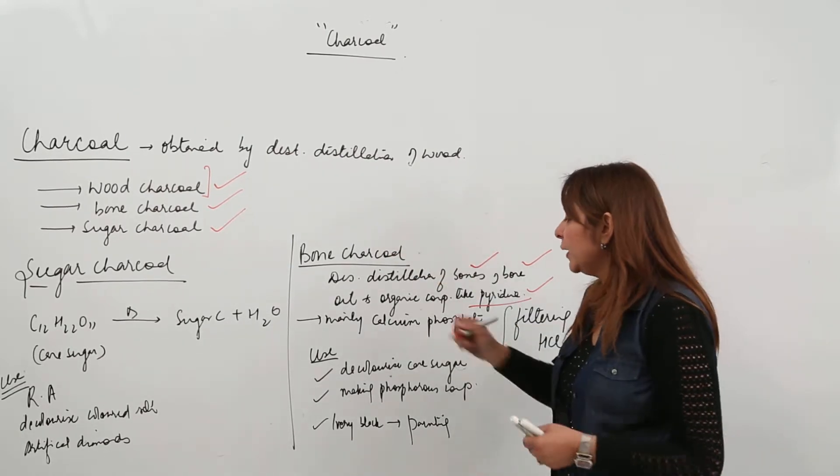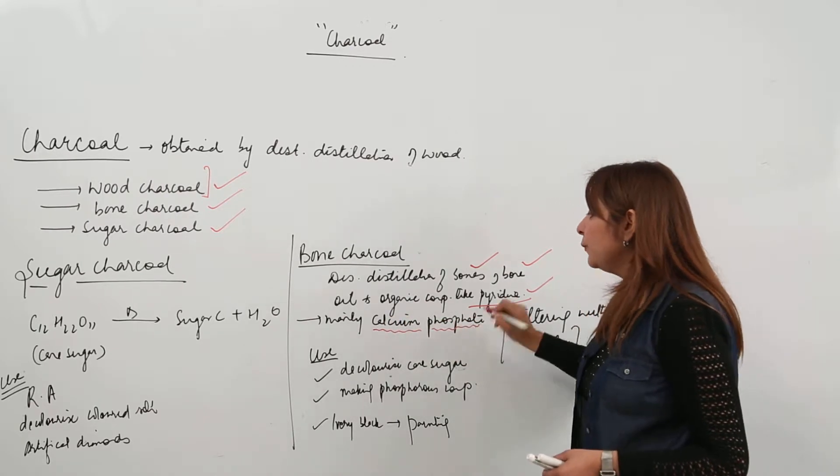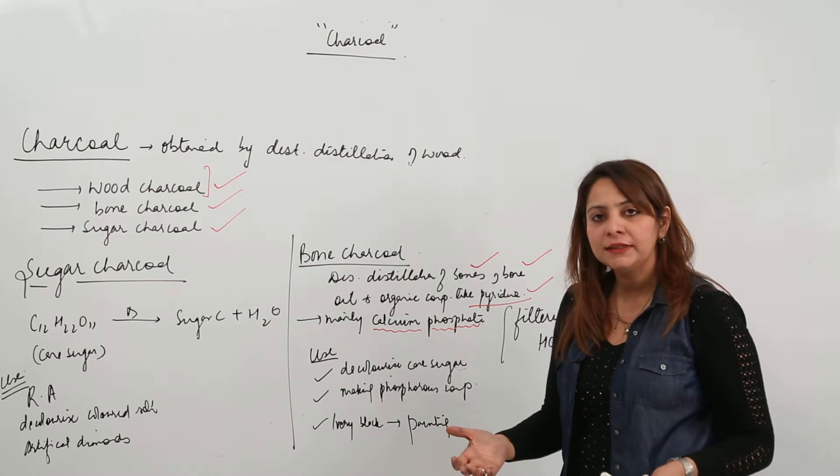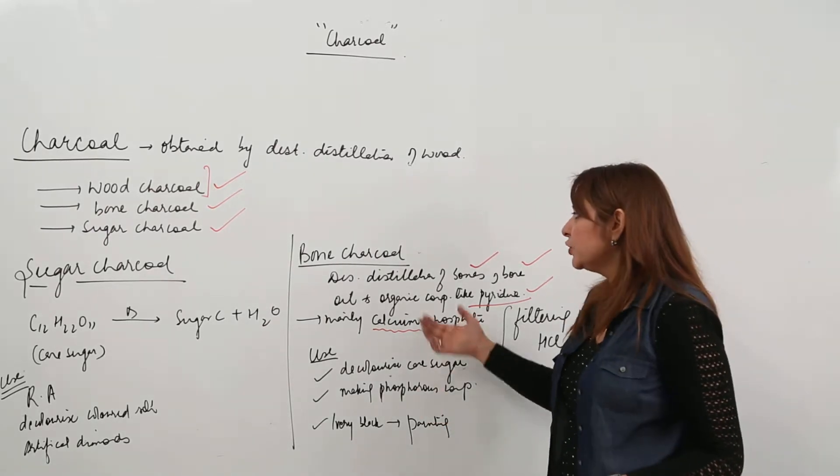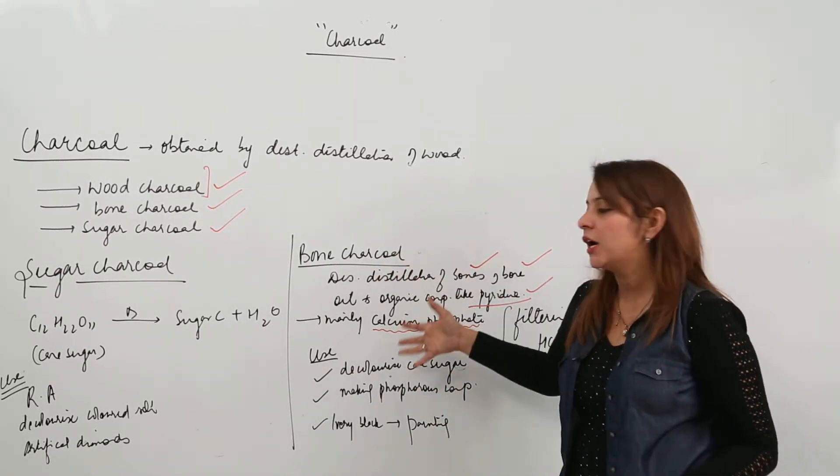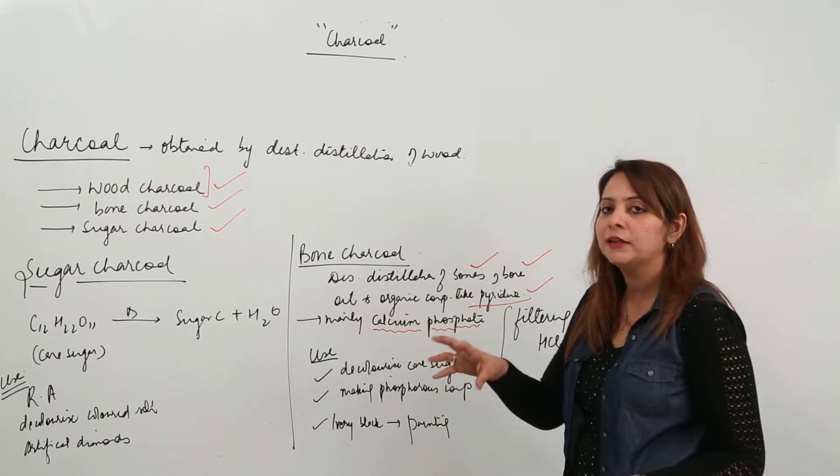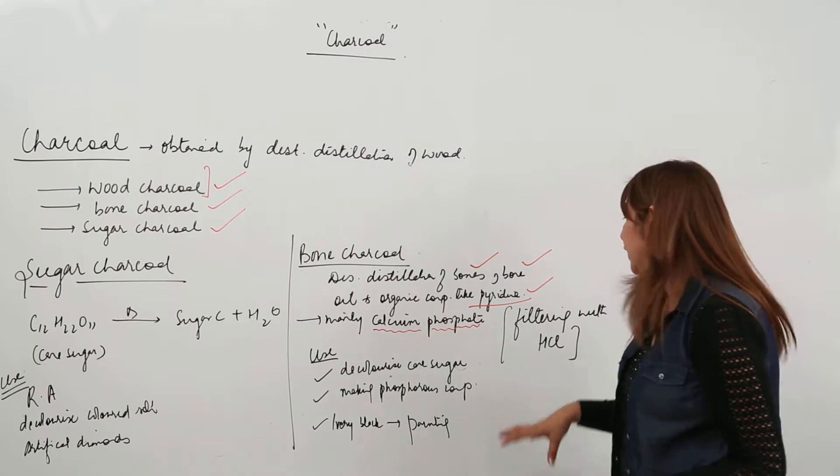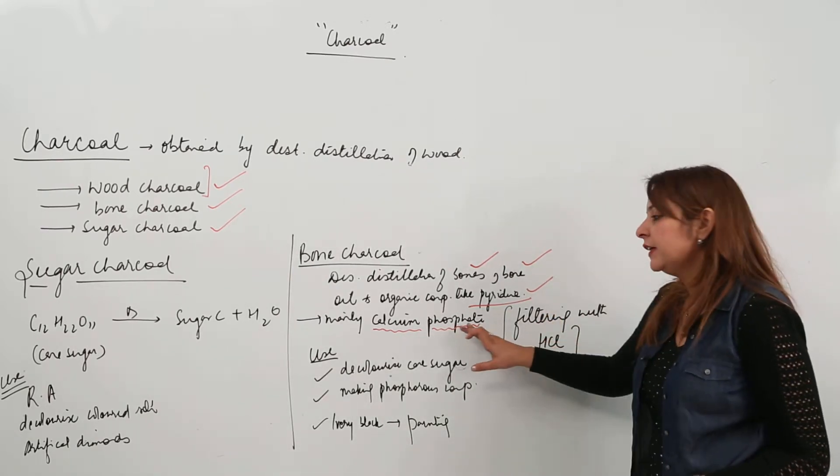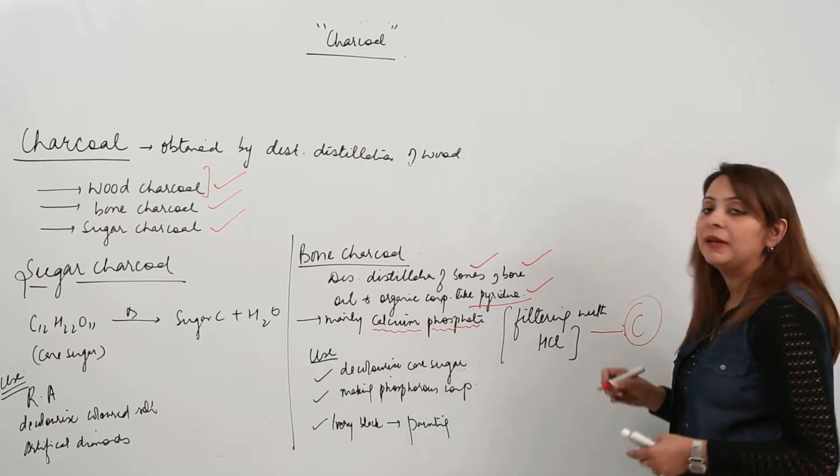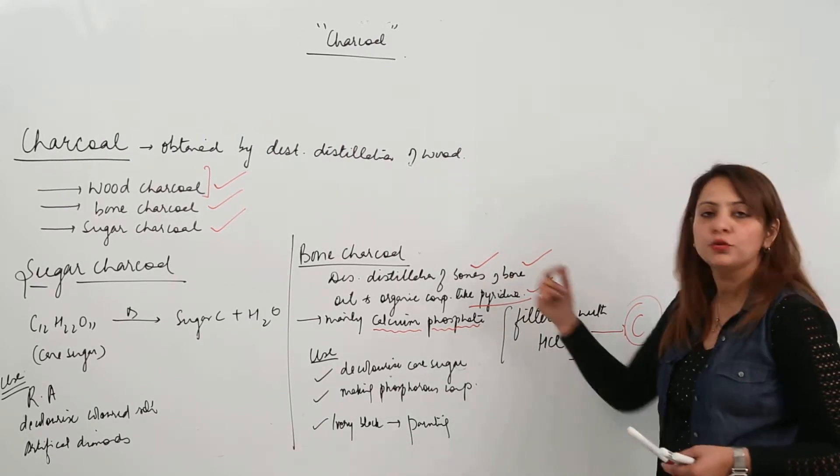So bone charcoal that is obtained mainly consists of calcium phosphate. So obviously we need to separate the carbon content. So how? We'll just take the charcoal, the residue which is obtained when you heat the bones. That residue is filtered with HCl. It dissolves the calcium phosphate and gives rise to a deep black color carbon that is called bone charcoal.